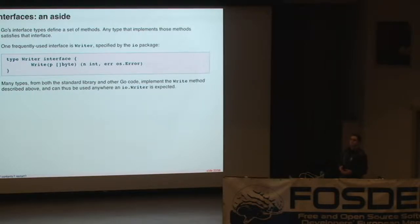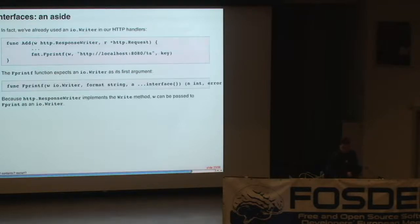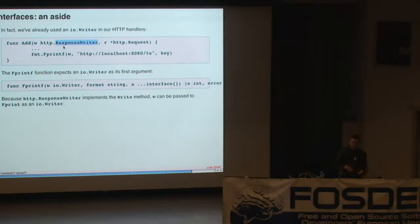Interface types define a set of methods, and any type that implements those methods can be used where a value of that interface type is expected. You can think of interface types as defining behaviors — any object that behaves in that way can be used where that interface is expected. One of the most frequently used interfaces in Go is the writer type specified in the IO package. The type writer is an interface containing the method write, which takes a slice of bytes, and returns the number of bytes written and an error value. Many different types implement writer: compressors, network connections, HTTP connections, files, tar archives. We've already used an IO writer in our HTTP handlers — the response writer argument implements the write method, and the fprintf function in the string formatting package expects an IO writer.